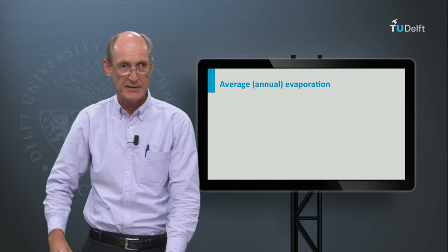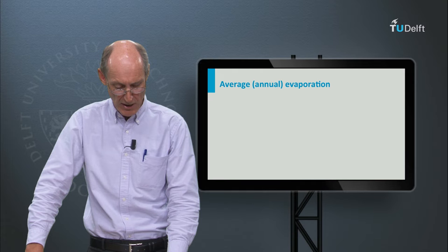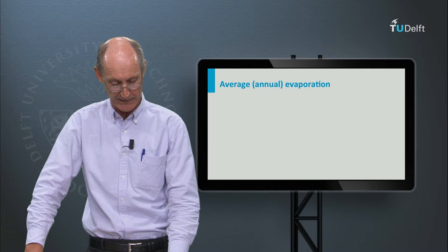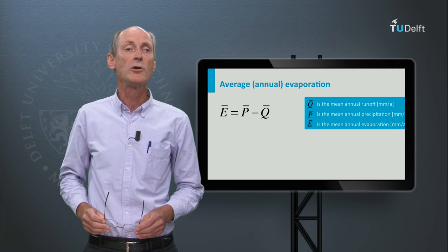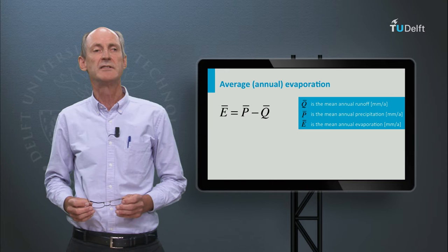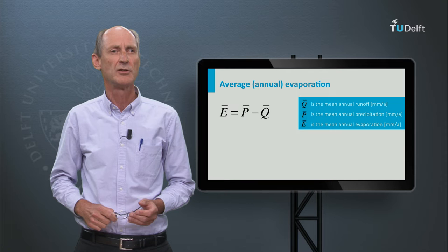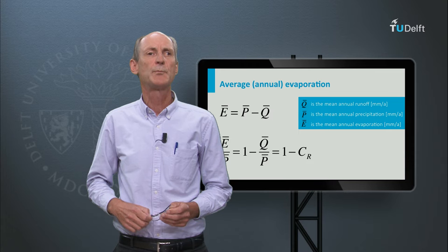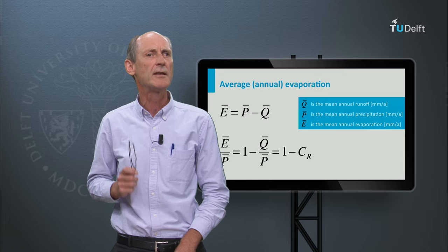The total amount of rainfall that has fallen over ten years is of course much larger than the difference in storage between the beginning and the end of the decade. So for long-term averages, indicated by a bar above the variables, a very simple relation applies: the evaporation equals the difference between the precipitation and the discharge, all expressed per unit surface area. Dividing by the precipitation, we see that the proportion of evaporated precipitation equals 1 minus the runoff coefficient.